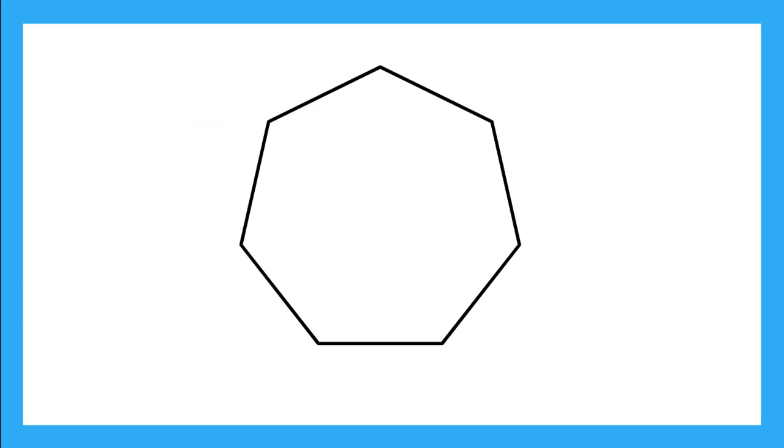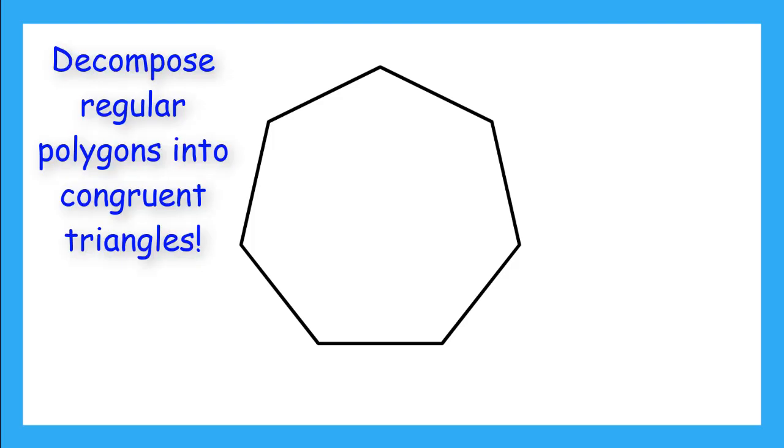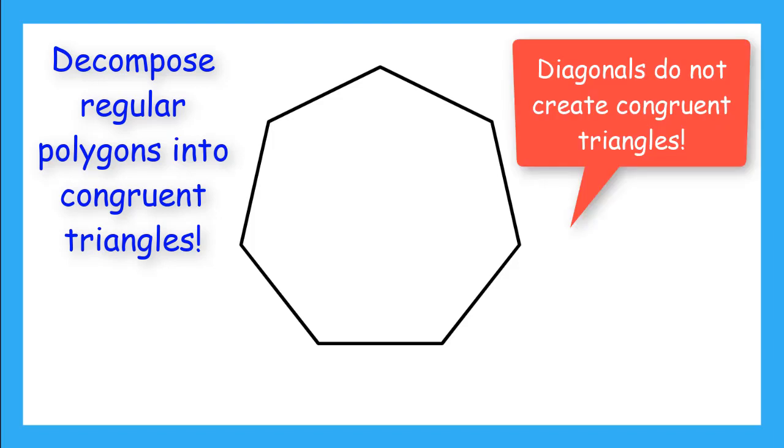Now what about finding the area of a regular polygon like this heptagon? The first thing we do is decompose our shape into congruent triangles. That means I can't use diagonals to make triangles since those triangles are different sizes and shapes.